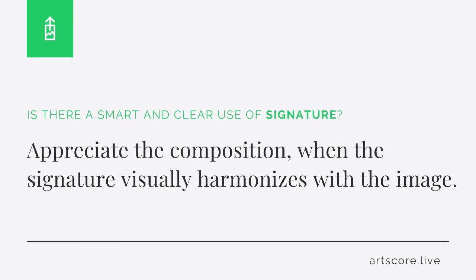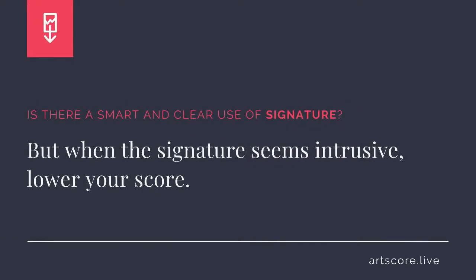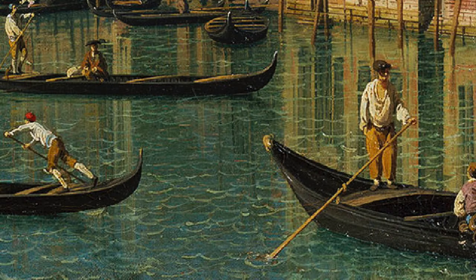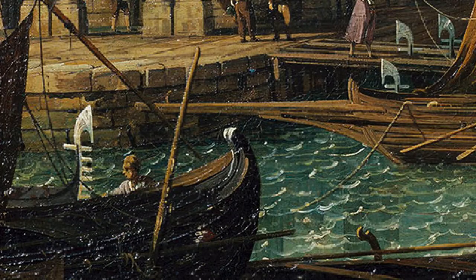Signature. Is there a smart and clear use of signature? Appreciate the composition when the signature visually harmonizes with the image. But when the signature seems intrusive, lower the score. Either I can't find the signature, or there is no signature, and so therefore we won't score the signature in this composition. What's your score?